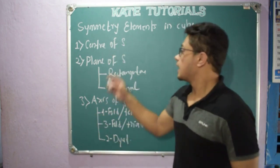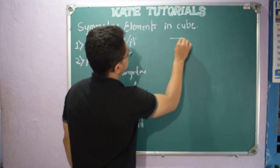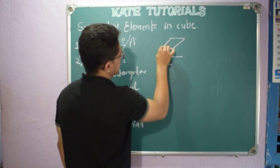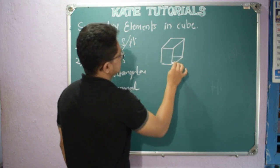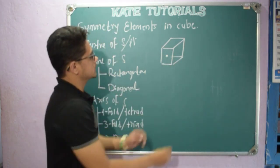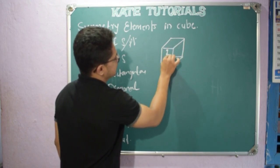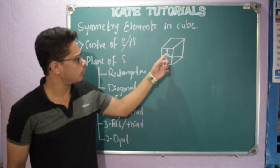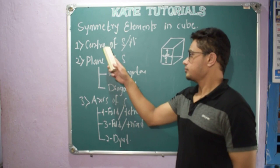The first one is center of symmetry, also called point of symmetry. Let me consider a cube. This is the center element — the point from which every plane, the above plane, the below plane, the side plane — all are equidistant. That point is nothing but the center of symmetry. It is the point from which all the planes are equidistant.